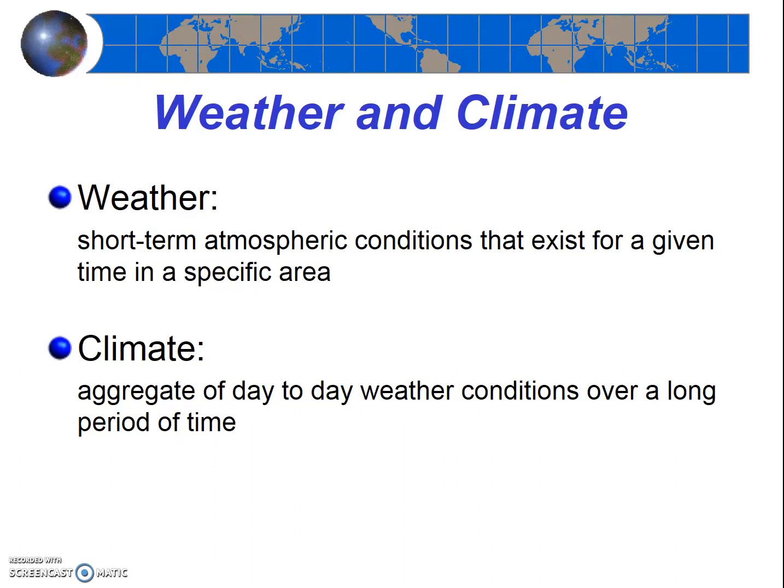For example, the climate here in Northern California is very warm, dry, and mild, but the weather may be rainy or cold on a specific day.